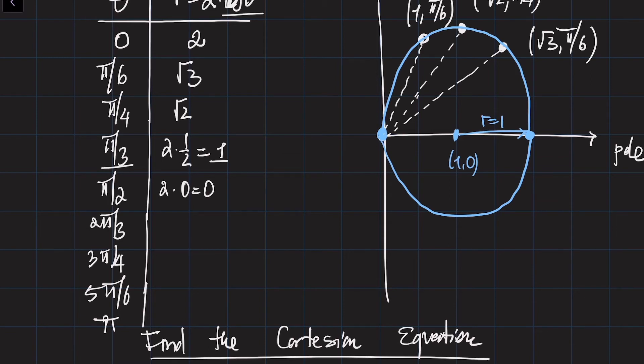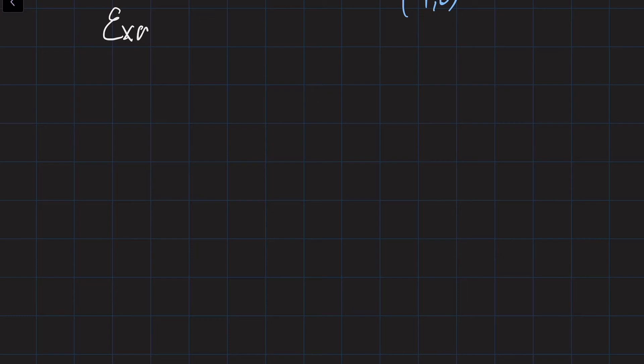So curves in polar coordinates are defined in a different way, and that's actually the advantage of polar coordinates. Let's continue and consider two more curves that will be used later for different applications. The next one is r equals one plus sine of theta.